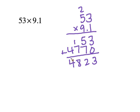Now the most important part is to remember to count how many decimal places there were. I don't see any in 53, but I do see 1 right here. So I'm going to count 1. So my answer is going to be 482 and 3 tenths. Please make sure that you understand you don't have to line up the decimals for this one.